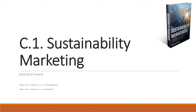Welcome to the first chapter of Part C of the textbook on sustainability management. The entire Part C is about different functional areas of companies and how companies can become more sustainable in these different functional areas by means of various instruments, measures and so on. And this first chapter covers the area of sustainability marketing.